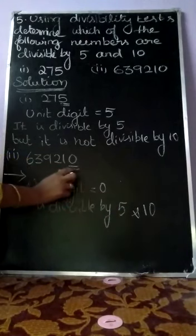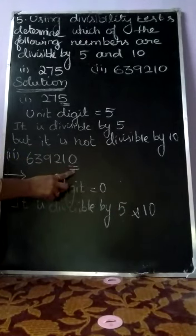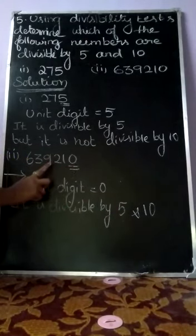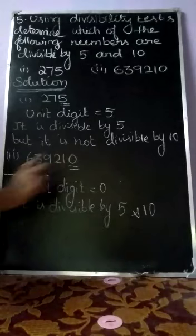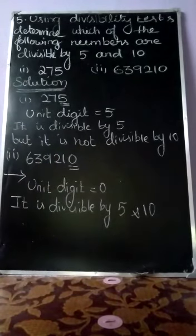Divisibility test for 10: the ending number must be 0 only. Only then is the given number divisible by 10.